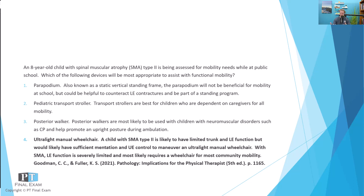The last incorrect option is the posterior walker. Posterior walkers are great for children with neuromuscular disorders like cerebral palsy, ideal for helping maintain an upright posture. However, for children with SMA type 2, ambulation is really not an option because of the severe loss of muscle tone in the spinal muscles. A posterior walker would more likely be used in a type 3, or if the child had cerebral palsy.